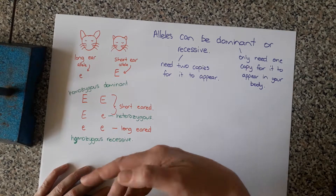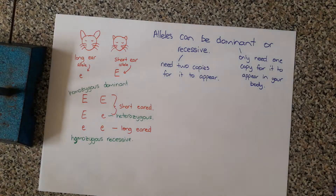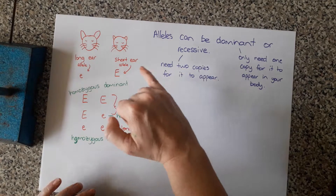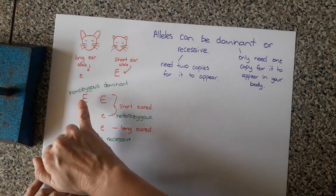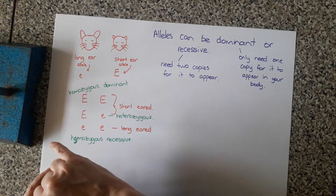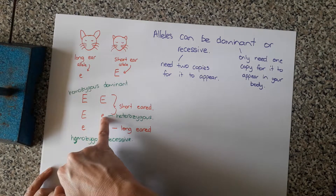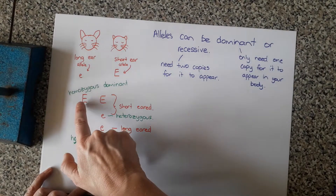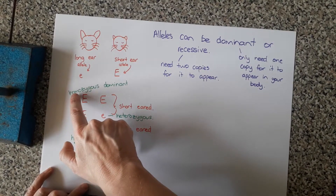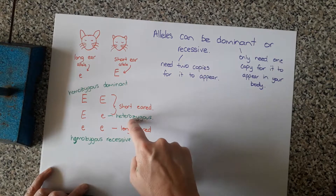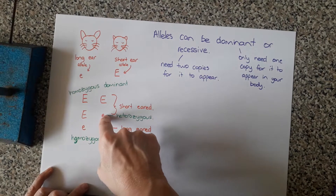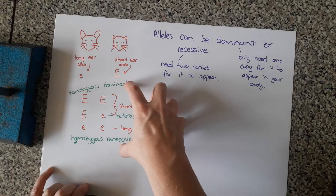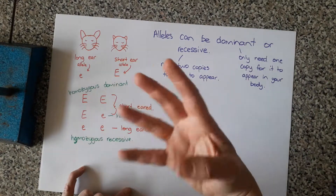We can also see that our short-eared creature could have two big E alleles, or it could have a big E and a little e allele, because you only need one copy for it to appear. So short-eared creatures could be homozygous dominant — same allele, the dominant one — or heterozygous, one dominant and one recessive.